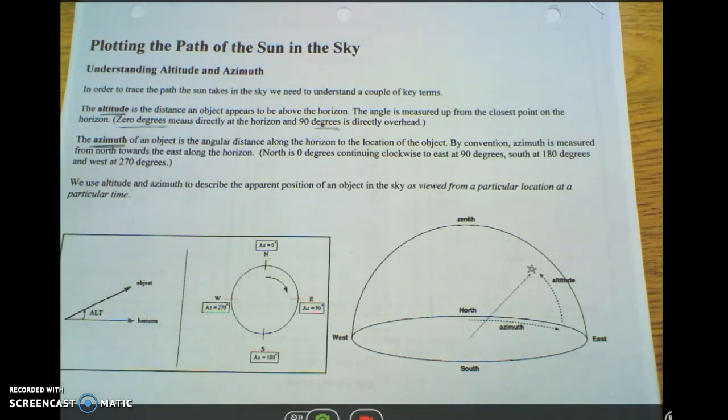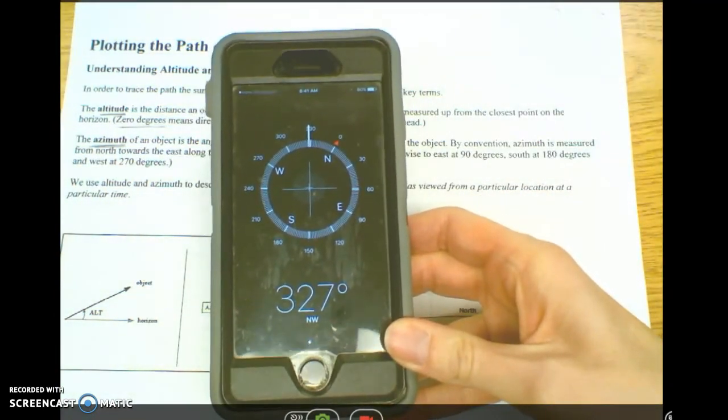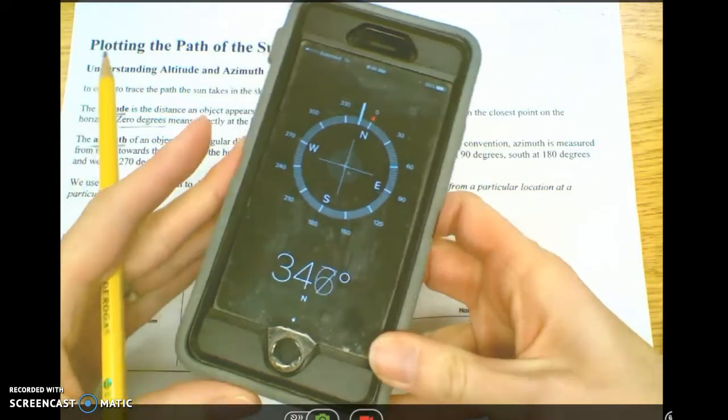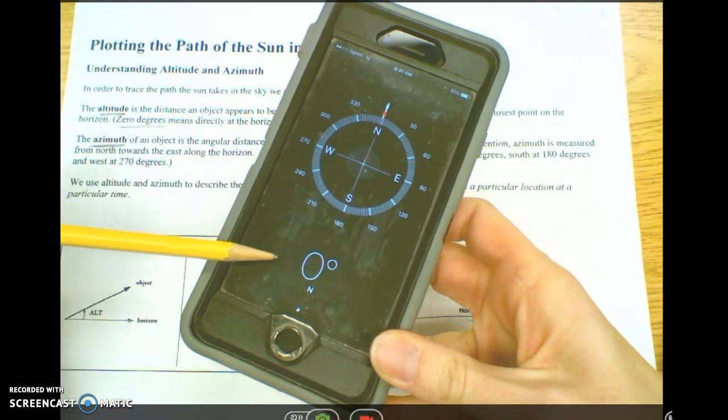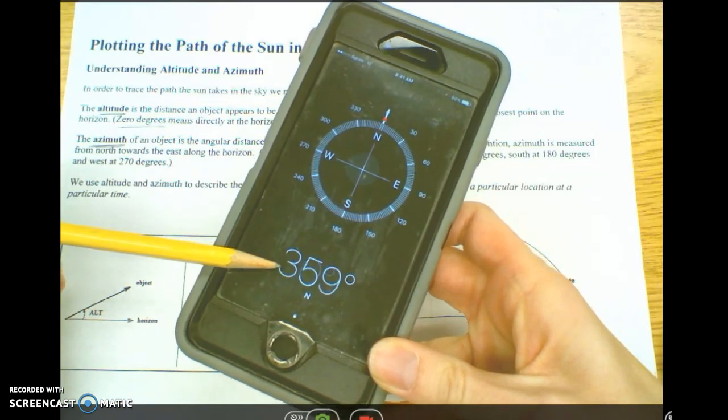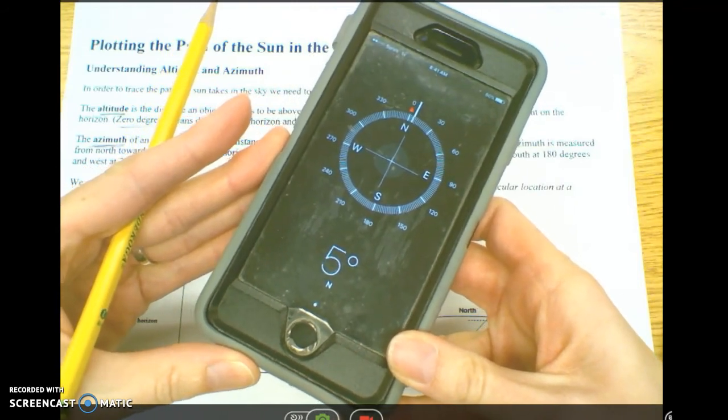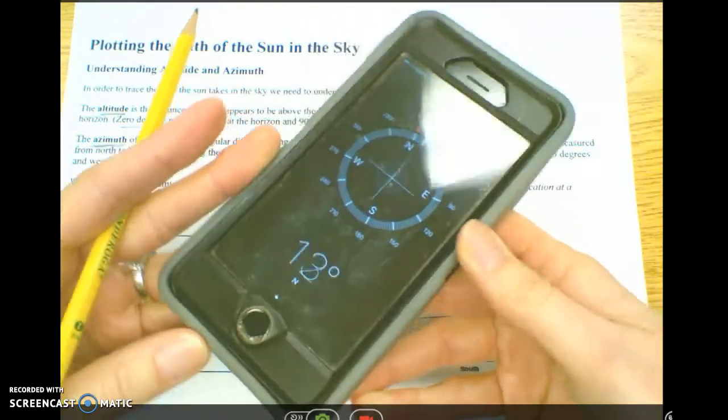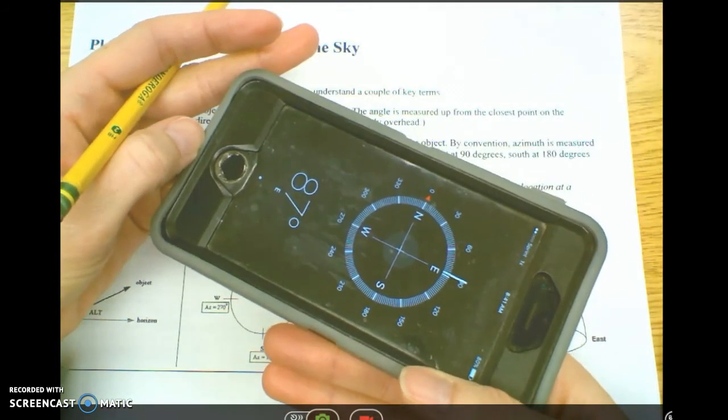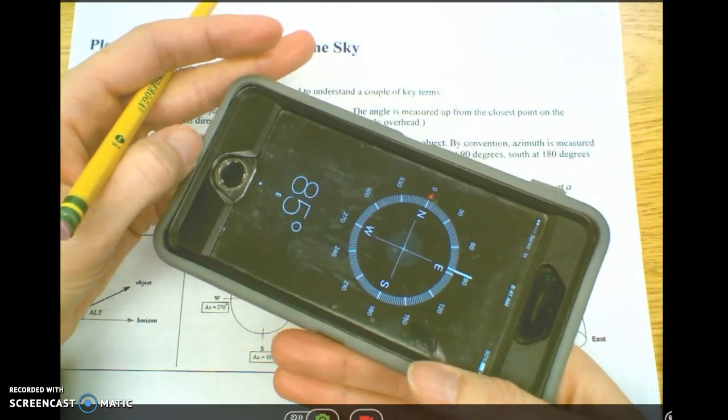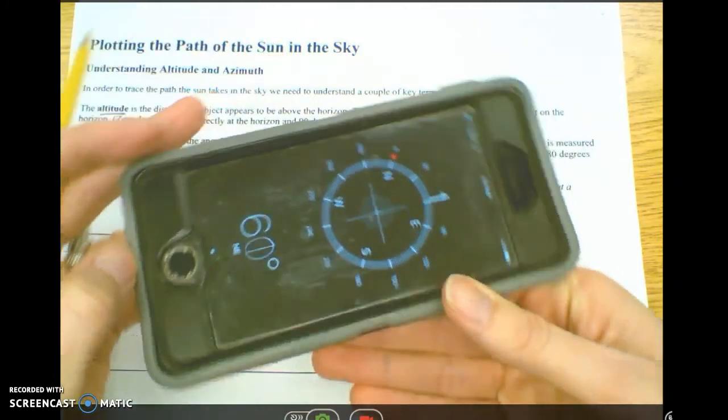In order to find the azimuth, a very easy way to do that is to use a compass, like you see here on my phone. As I turn and point in the direction of the object, you can see that down here is the angle at which the object is located. So if I were outside and I turned to look, not directly at the sun, but the sun's position in the sky, then I would know the azimuth of that object. And again, knowing these two numbers is going to allow you to chart the sun's path across the sky, or any object's path across the sky at any given time.